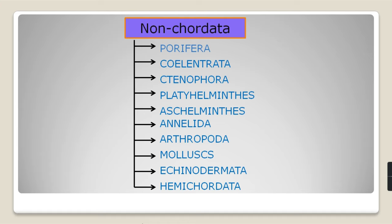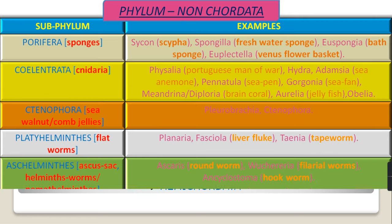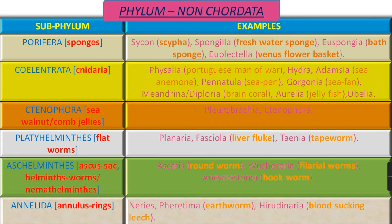Now let's see the examples of each of these sub-phylums. Examples of sub-phylum Porifera, which are commonly known as sponges, are: Sycon, known as Sypha; Spongilla, known as Freshwater Sponge; Euspongia, known as Bath Sponge; and Euplectella, as Venus Flower Basket.